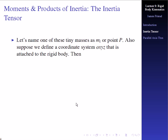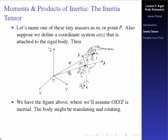We name one of these tiny masses as M_i at point P. We can define a coordinate system, o, x, y, z, that is attached to the rigid body — that's a lowercase coordinate system. Then we have a capital O, X, Y, Z inertial frame. The potato-shaped body has point P represented by M sub i, one of the many masses making up this body, all attached together.